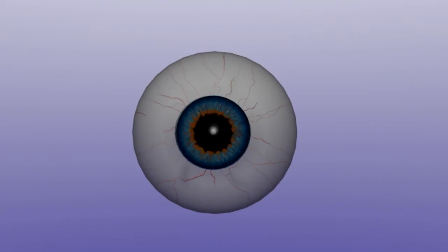There are many parts that make up the eye. The sclera is the outer white part of the eye.